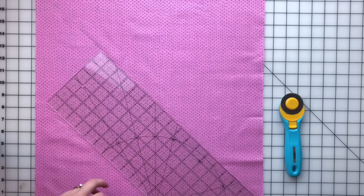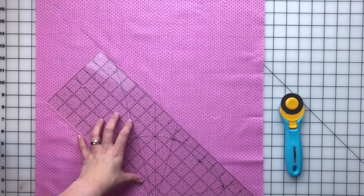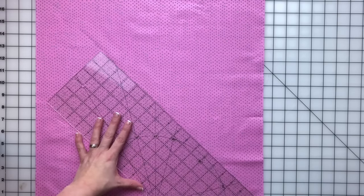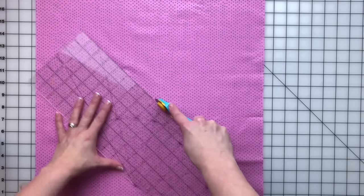Start with a square. This one is 18 inches and I'm using the 45 degree angle on my ruler to help me cut the square in half diagonally.